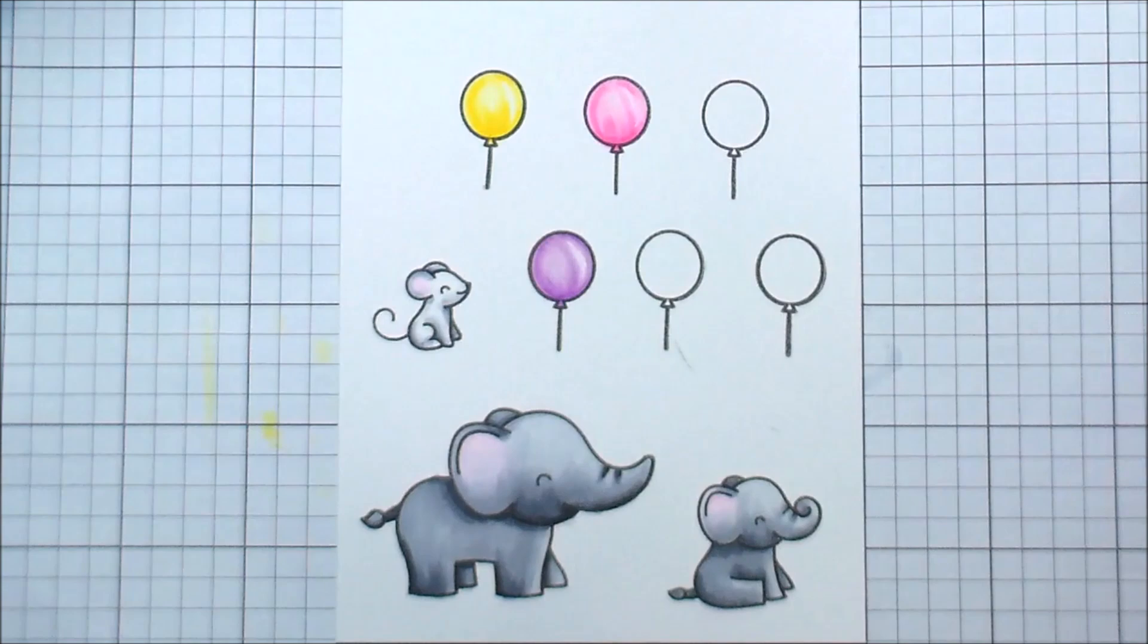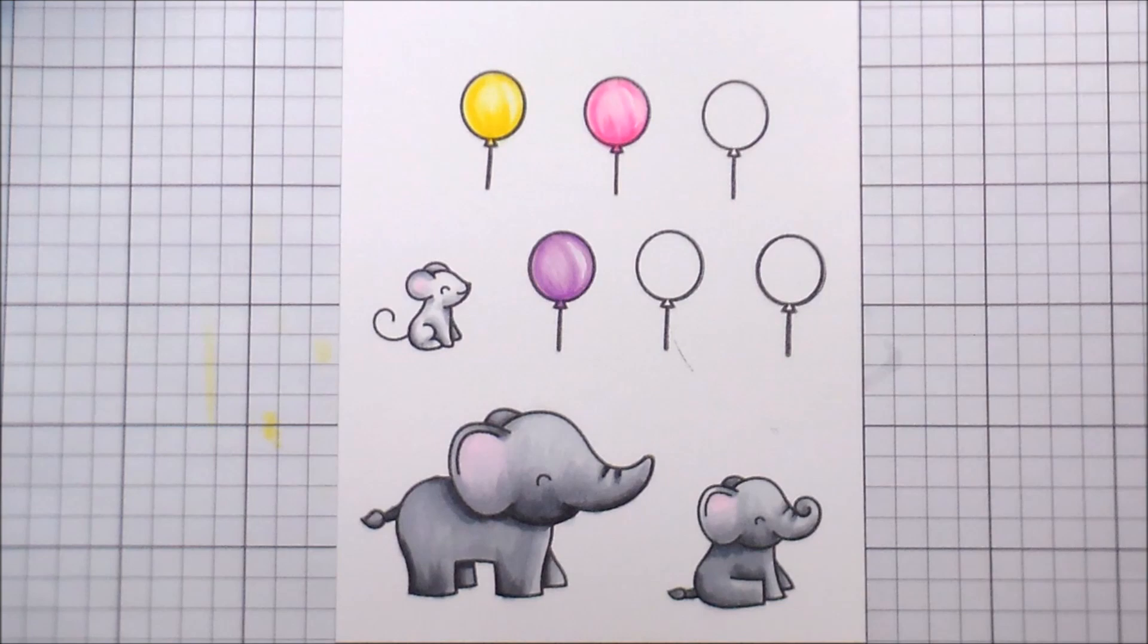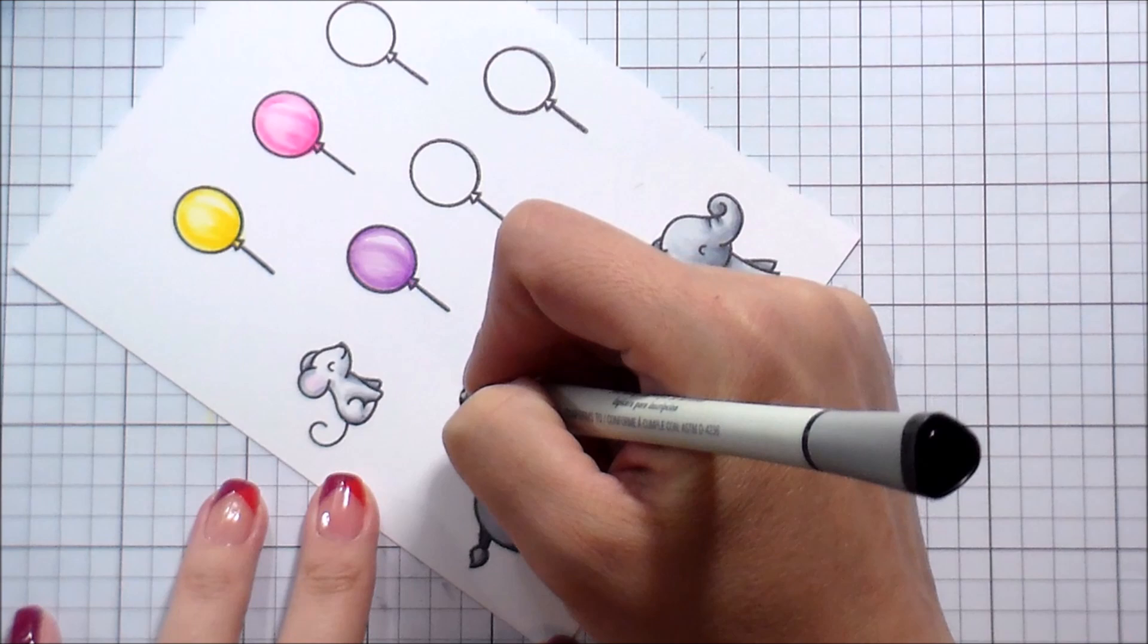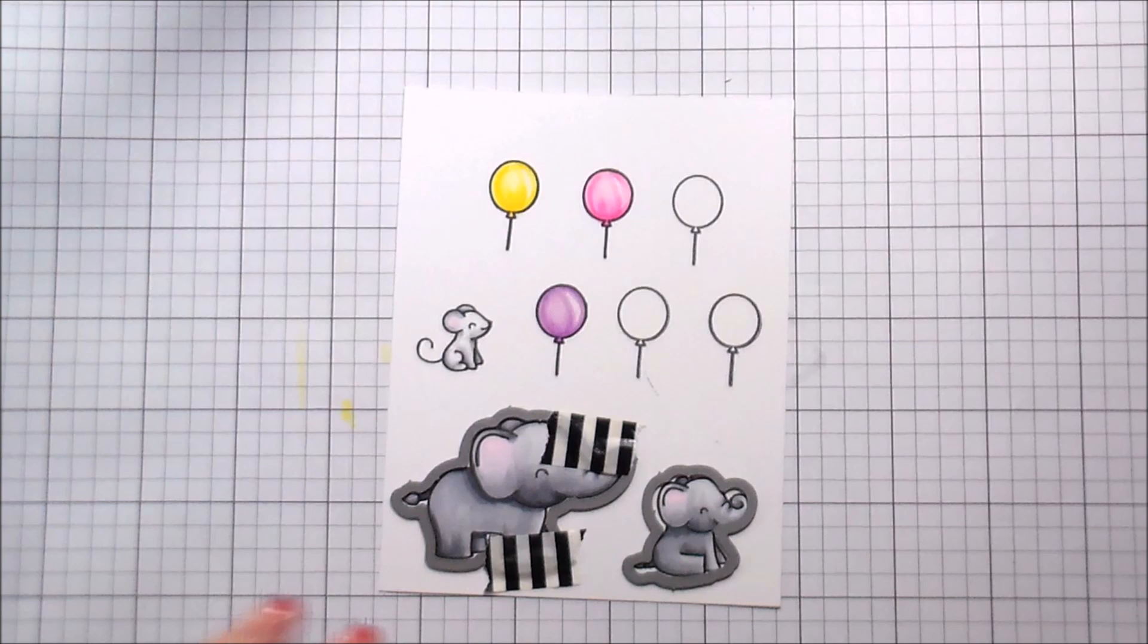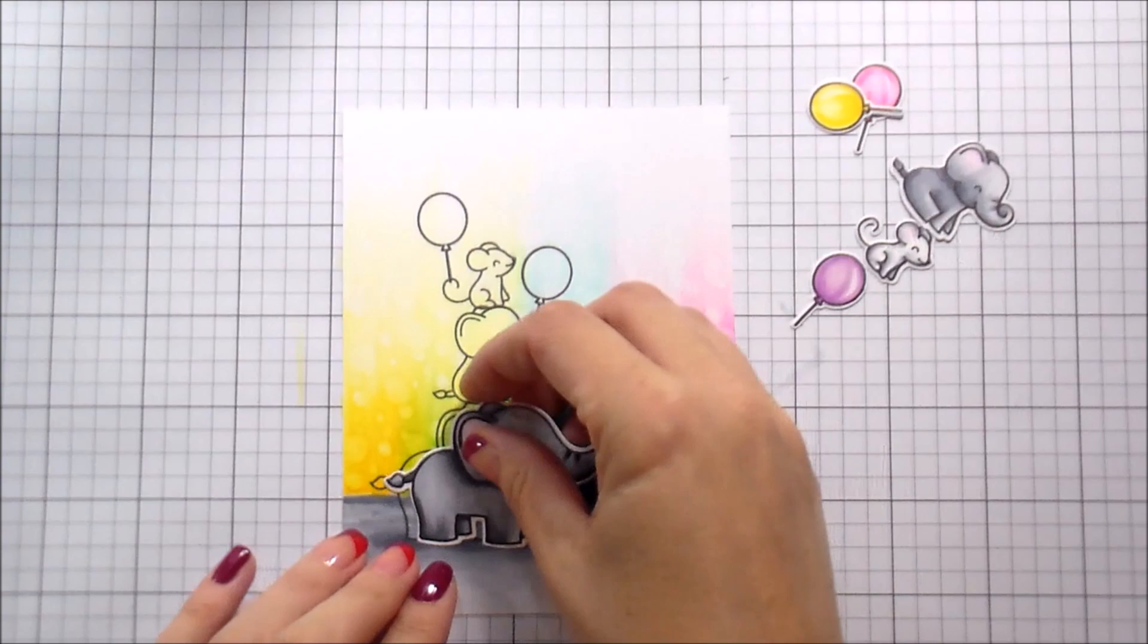So now that they're all colored, I'm going to go in with a white gel pen and just reinforce that highlight. It's not something that you have to do. It's just something that I prefer to do. And I would recommend, if you're going to outline your images to do it before you die cut them, or you're going to be chasing those little guys all over your desk, trying to outline them. I use a Copic safe pen just in case I have to go back and make any corrections. But if you're done Copic coloring, you can use anything you have.